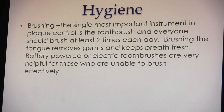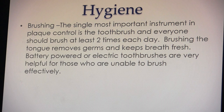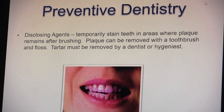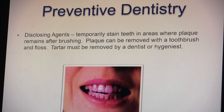Everyone should brush at least two times a day. Brushing the tongue removes germs and keeps breath fresh. Battery-powered or electric toothbrushes are very helpful for those who cannot brush effectively. We actually recommend electric toothbrushes over manual because they spin many more times per second. Disclosing agents temporarily stain teeth where plaque remains after brushing. Plaque can be removed with a toothbrush and floss, but tartar — hardened plaque — must be removed by the dentist or hygienist.